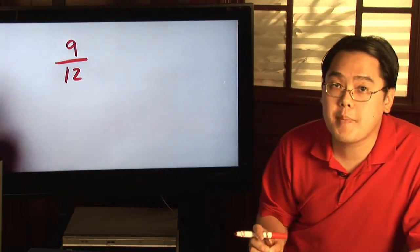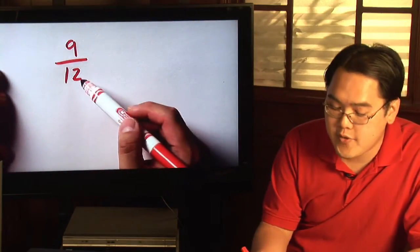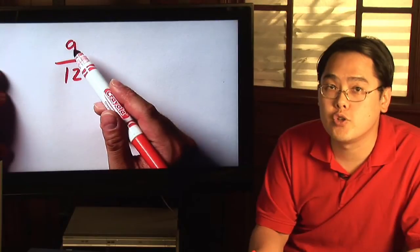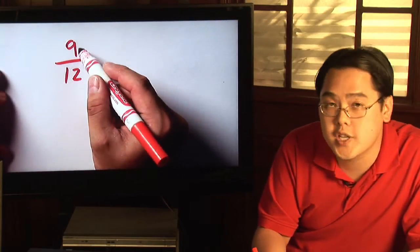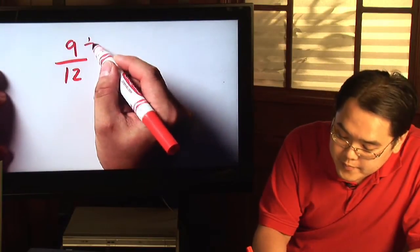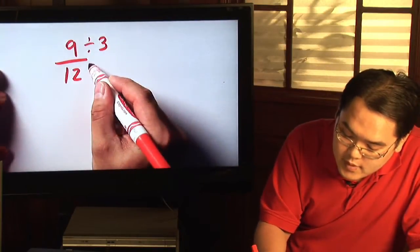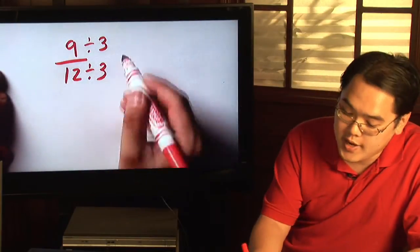If you think about a number that they both have in common, a number that will go into both of them, then that is the number that you divide by to reduce. For example, because 3 divides both 9 and 12, you can divide both numbers by 3 and as a result the fraction will be reduced.